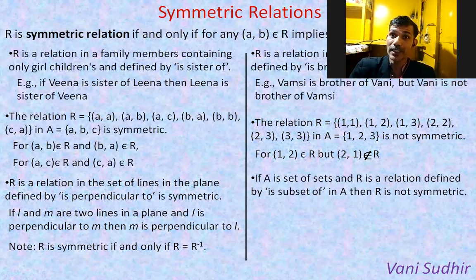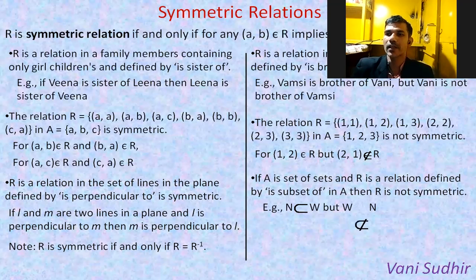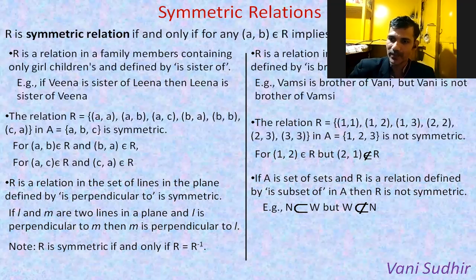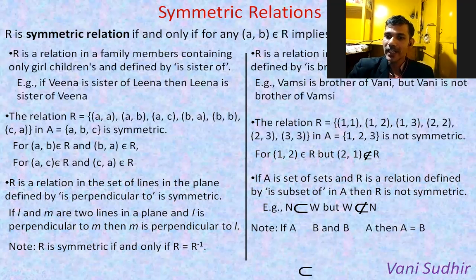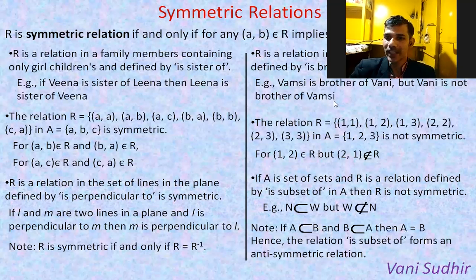In sets, we have seen the 'subset of' relation — it is not a symmetric relation. For example, all natural numbers are a proper subset of whole numbers, but whole numbers are not a subset of natural numbers, because whole numbers contain 0, which is not in natural numbers. When A is a subset of B, B need not be a subset of A — this is possible only when A equals B. This relation has a special name: it is called an anti-symmetric relation. Therefore, 'subset of' is an anti-symmetric relation.